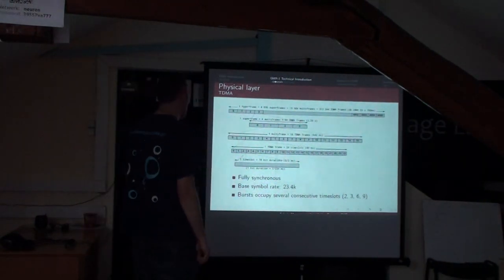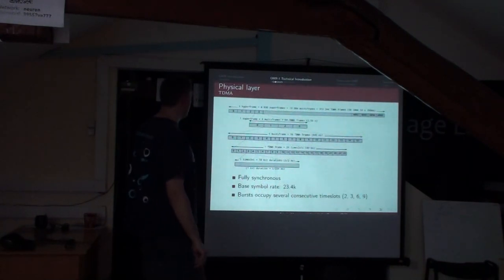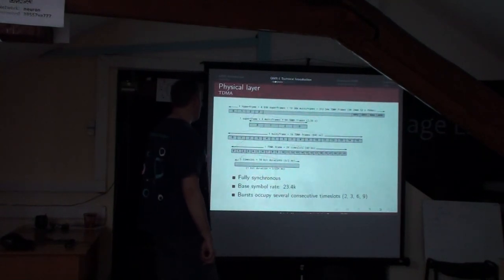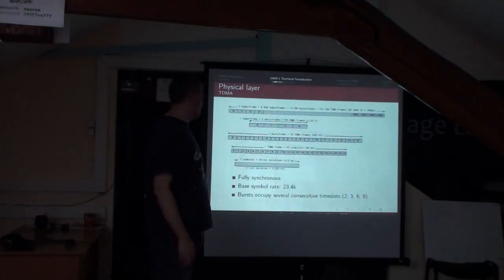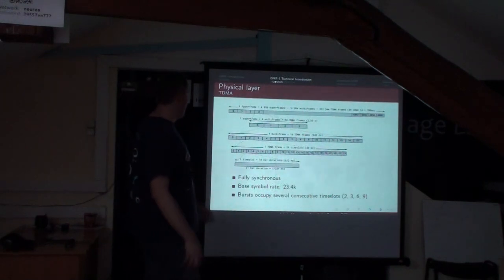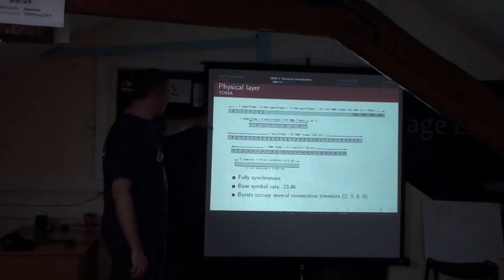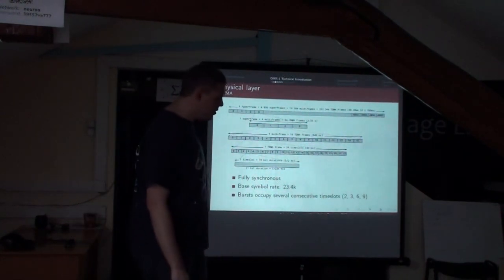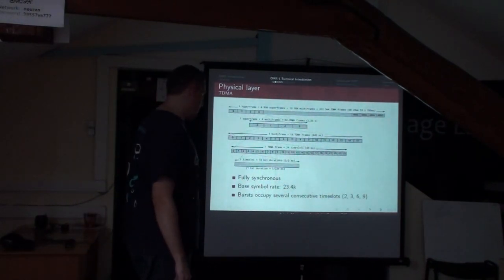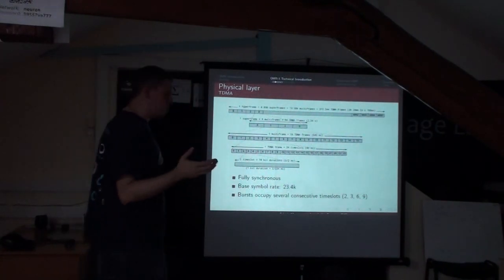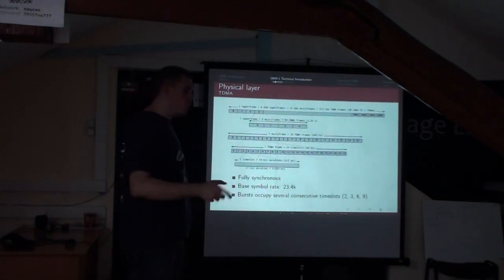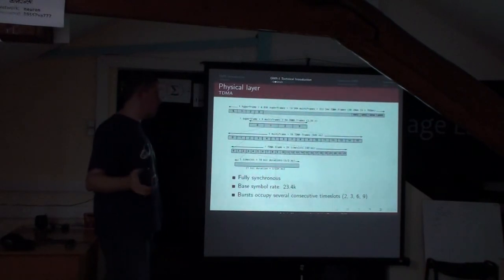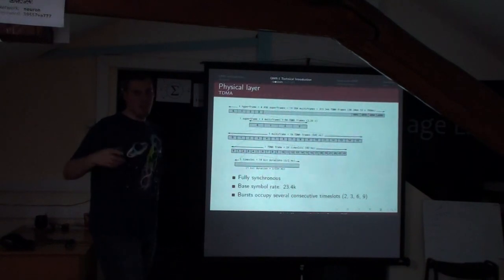The physical layer of Thuraya looks pretty much like GSM except all the numbers are changed. One frame is 24 time slots instead of 8. One multiframe is 16 frames instead of 51. The symbol rate is pretty low at 23.4 kHz. Bursts — the unit of information on a physical channel — can occupy several consecutive time slots depending on how much information they carry, giving them a kind of variable length by channel type.